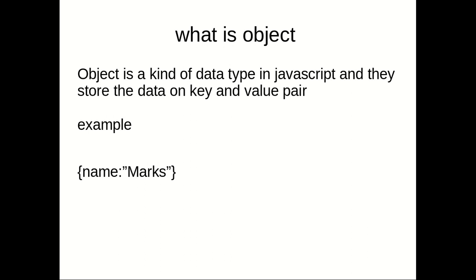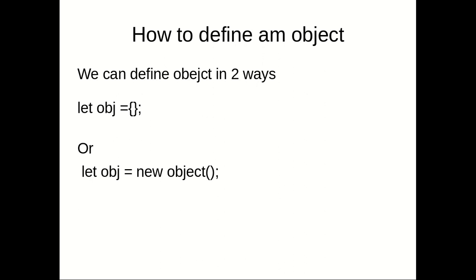The first question is: what is an object? An object is a kind of data type in JavaScript. Strings, integers, and floats are primitive types, but objects are non-primitive. We store values in objects as key-value pairs. As you can see in the example, 'name' is the key and 'marks' is the value — you can also call these a property and its value. There are two ways to define an object: with curly brackets, or with the `new Object()` function.